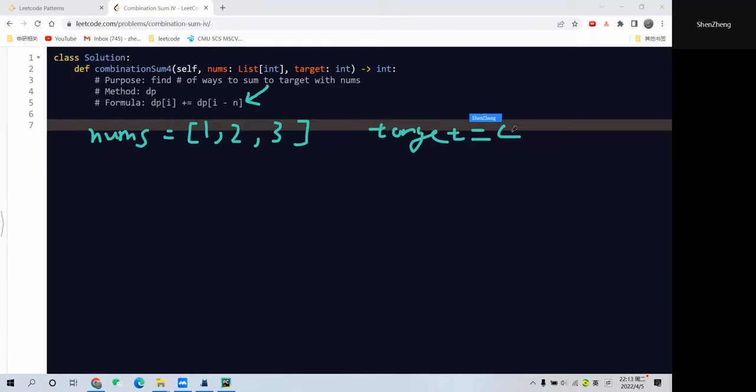First thing for dynamic programming approach is to initialize the DP array. Since the target is 4, the DP array should have length target plus 1, so 5 elements. The base case is 1, because if we can exactly get the target in one path, it would be one approach. The other scenario, which is the default, should be set to 0. This means we cannot reach, so the ways should be 0.